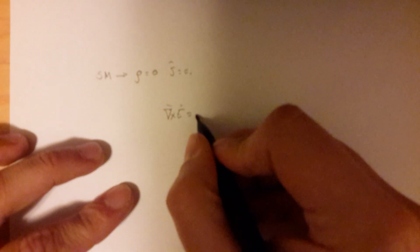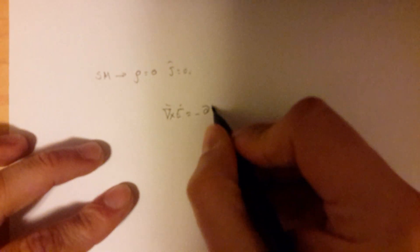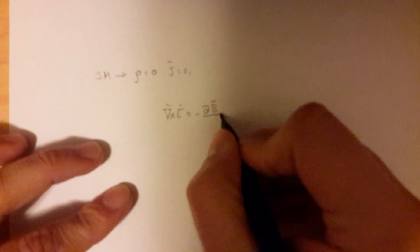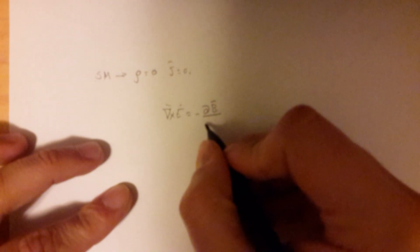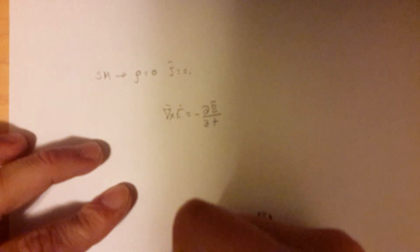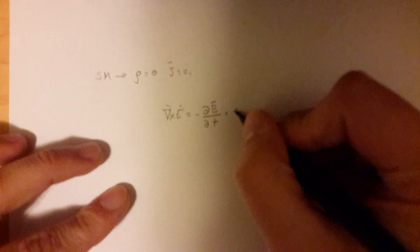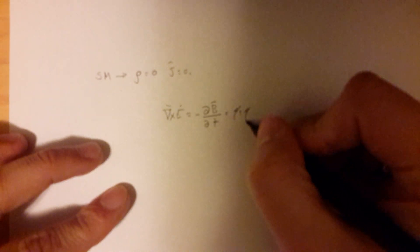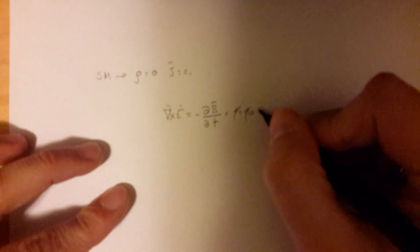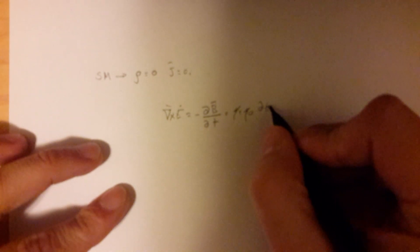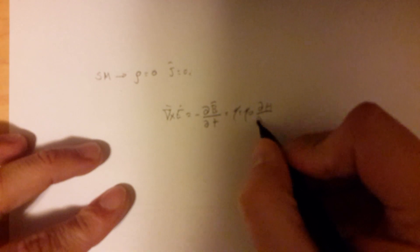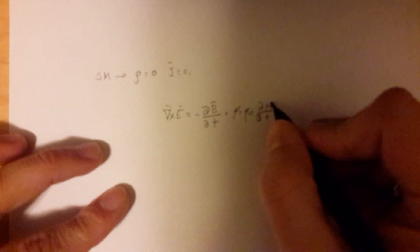We are going to start by writing Maxwell's equation. The curl of E equals minus the time derivative of the magnetic field. We can write this part of the equation as minus mu_R times mu_0 times the time derivative of H.